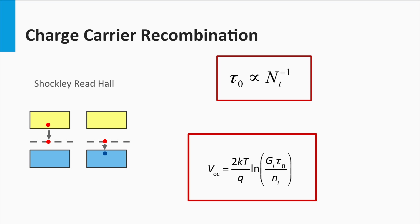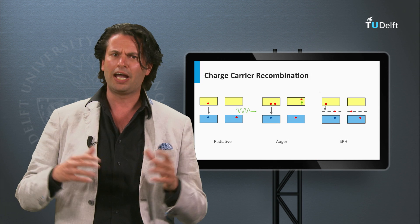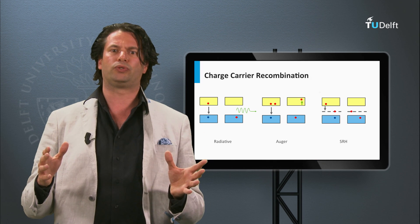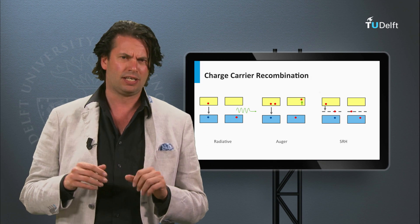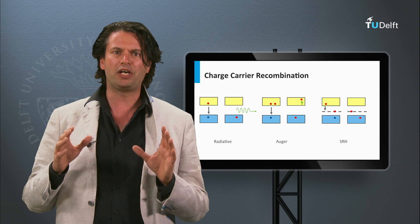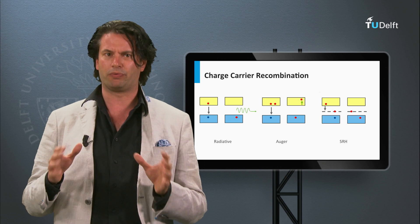Defects can be located in the bulk of the various semiconductor materials, but can also be present at the various interfaces between materials used in the solar cell, like semiconductors, transparent conductive oxides, and metal contacts. Let's consider solar cells without bulk and interface defects — then the other two recombination mechanisms start to play a role.